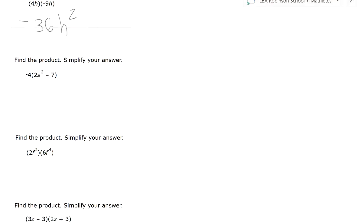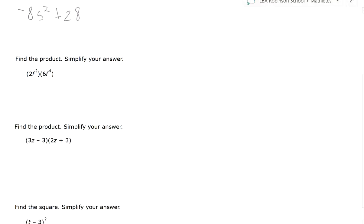Let's move on to the next one. The next one is easier than it looks. It's simply distributive property. Negative 4 times 2s squared and negative 4 times negative 7. Remember that minus there is a negative. So we have negative 4 times 2s squared. We're going to have negative 8s squared. And then we have negative 4 times negative 7, which is simply plus 28.